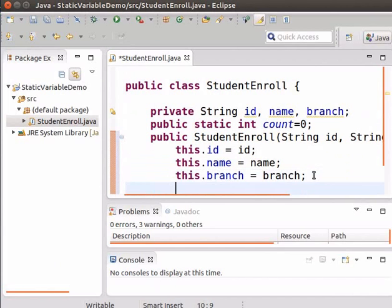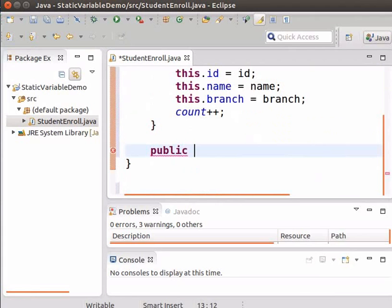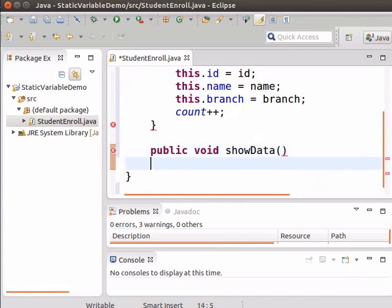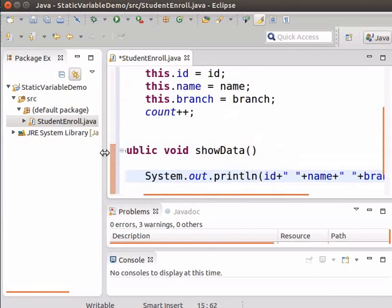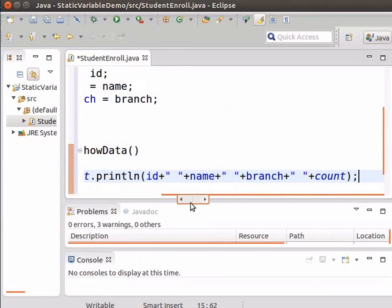So inside the constructor type count plus plus semicolon. Now we will add a method show data to this class to print the values of all the variables. So type public void show data. Within brackets type the following code to print the values of id, name, branch and total number of students enrolled.